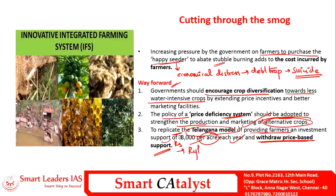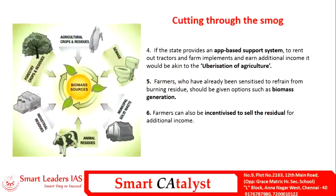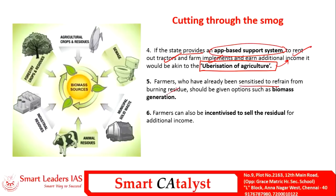This scheme is called the Ritu Bandhu scheme. It would also be good if the state provides an app-based support system to rent out tractors and farm implements rather than forcing farmers to purchase the happy seeder harvester — this can be technically referred to as the uberization of agriculture, enabling farmers to earn additional income. Apart from sensitizing farmers to refrain from burning residue, they should also be made aware of options for biomass generation, wherein agricultural residues can be converted into energy, and farmers can be incentivized to sell the residue for additional income.